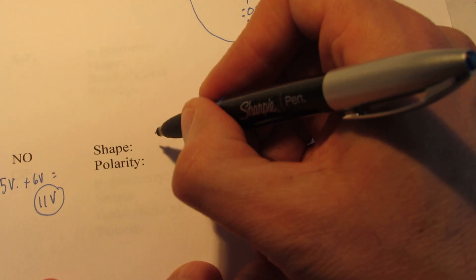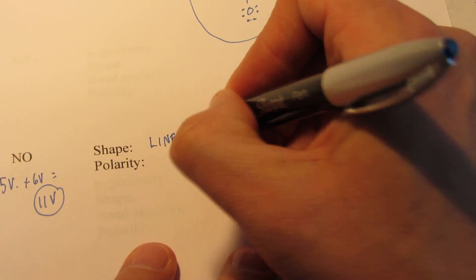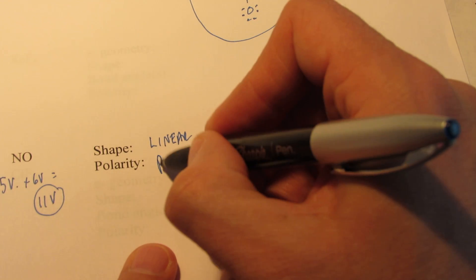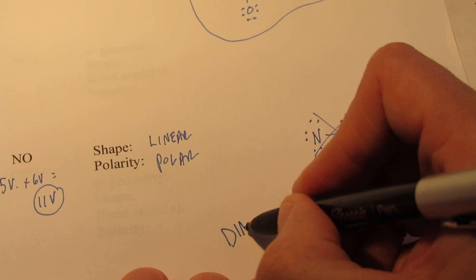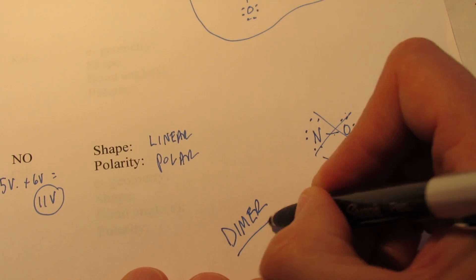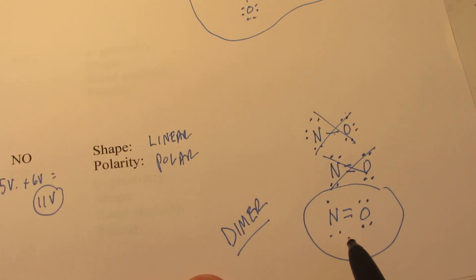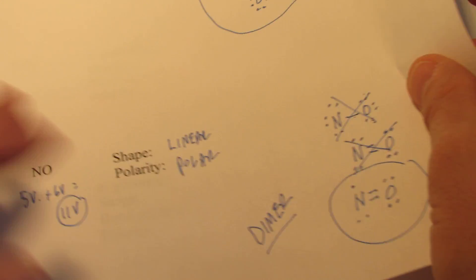Now there's only two atoms. So of course that shape has to be linear. They are different atoms. So the dipoles do not completely cancel each other out. So this molecule is polar. Now take a few minutes of your own time. Look up the word dimer, D-I-M-E-R, and see if it applies to this molecule NO.